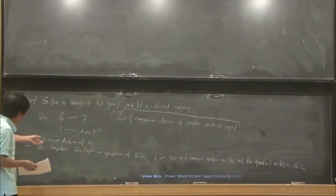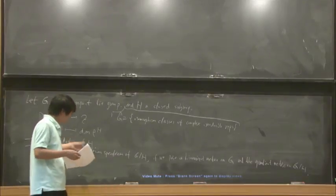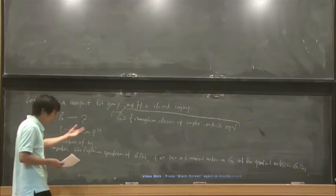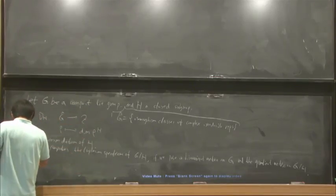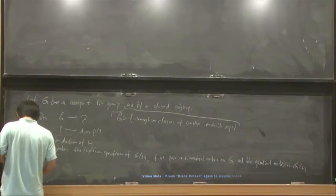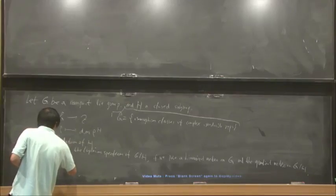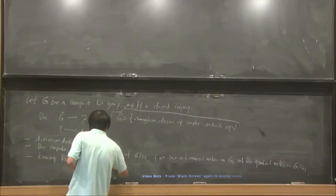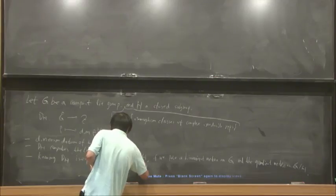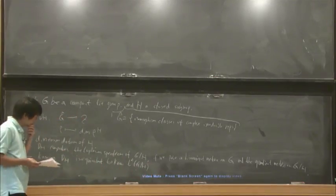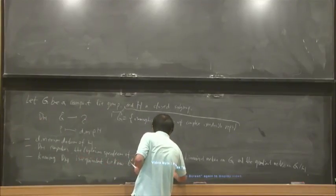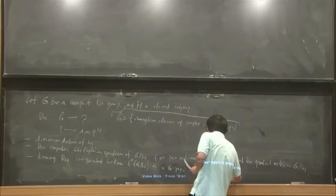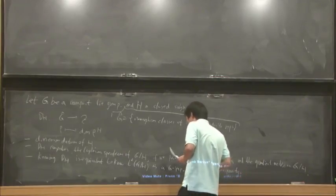So in this sense, this object DH is some kind of spectral information of the subgroup H. This follows from Frobenius reciprocity. Okay.